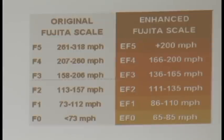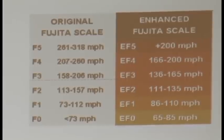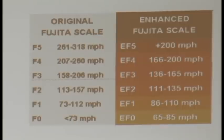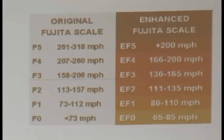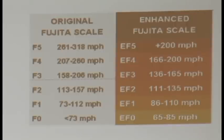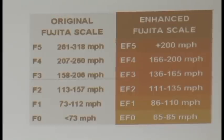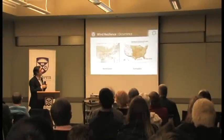There are two Fujita scales: the original and the Enhanced Fujita scale, introduced more recently to build a better correlation between damage and wind speed. When you compare hurricanes and tornadoes, the wind speeds are pretty much in the same range across different categories. So the difference in damage between a hurricane and a tornado is not due to wind speed — it's the shape and dynamics of the storm system that makes the difference.